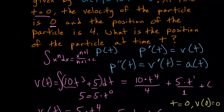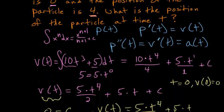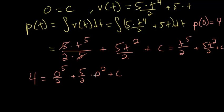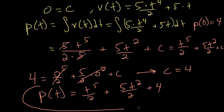We just have to figure out what C is. At time t = 0, the position of the particle is 4, so p(0) = 4. Plugging in: 4 = 0⁵/2 + (5/2)(0²) + C. Both terms are 0, so C = 4. Therefore, our position as a function of t is p(t) = t⁵/2 + 5t²/2 + 4. And this is our final answer.